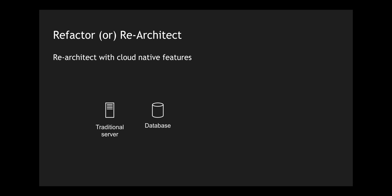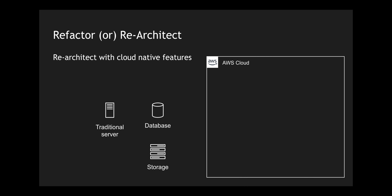Let's take an example. Say I have a Java application running on a traditional server. It connects to a database and archives some files in a storage location. This is a simplistic but monolithic, legacy architecture. I want to rethink and use cloud-native features to create a microservices deployment, and I'm going to move towards Amazon Web Services.